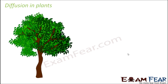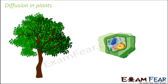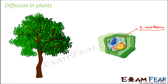Now let us see where diffusion will occur in plants. A plant, like all other living organisms, is made up of several cells. Each of these plant cells has a plasma membrane — this yellow colored boundary which you see around the cell. We have spoken about plasma membrane and its properties in one of our previous lessons. This plasma membrane is a selectively permeable membrane, meaning it selectively allows some particles to pass through it and doesn't allow certain others. Diffusion, or the movement of particles, occurs across this plasma membrane.